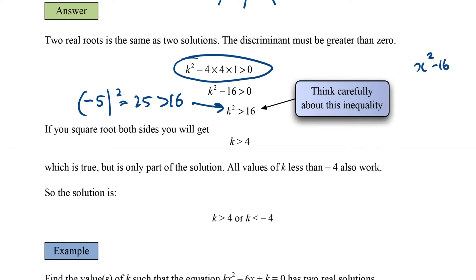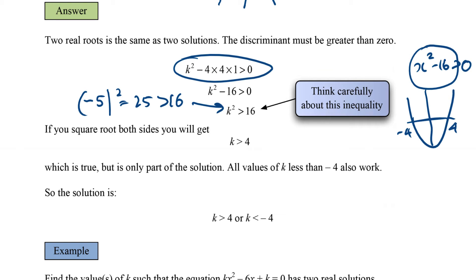To solve k squared minus 16 greater than 0, imagine drawing the graph of x squared minus 16. The roots are negative 4 and 4, and we're looking for the x values where the graph is above the x-axis, greater than 0. You can see it's all the x values to the left of negative 4 and all the x values greater than 4. So in terms of k, we're looking at k greater than 4 or k less than negative 4.